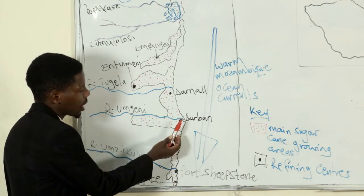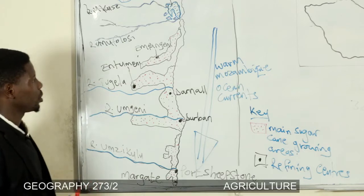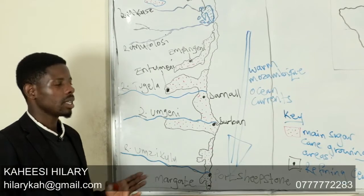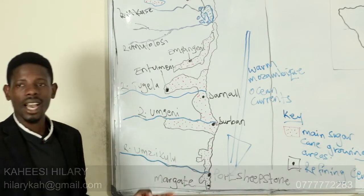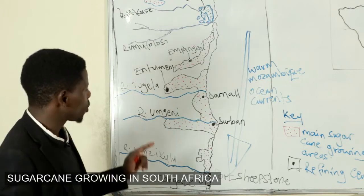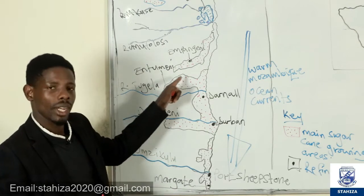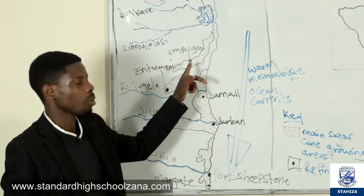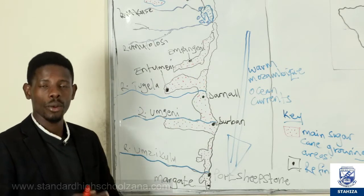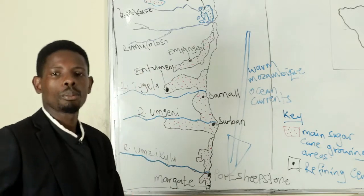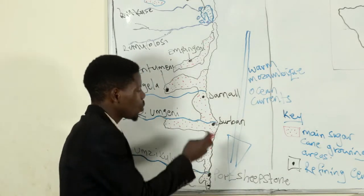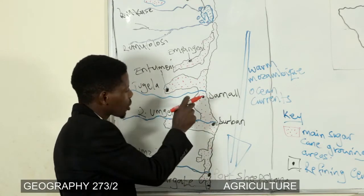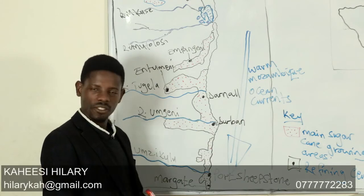These towns shown as black dots on our sketch map — Empangeni, Entumeni, Durban, Dunwall, and others — these are the refining centers. When the sugarcane is cut, it is taken to these centers for processing, where we get the finished products. These act as industries that use the sugarcane as a raw material to get different products.